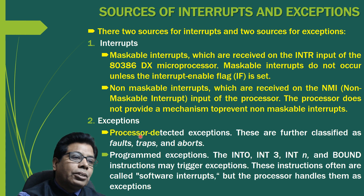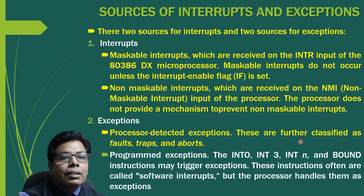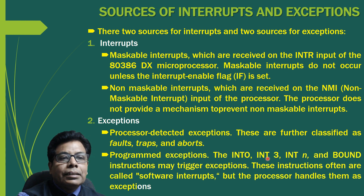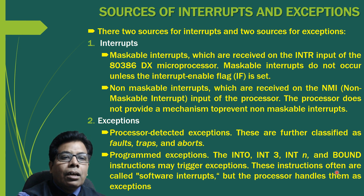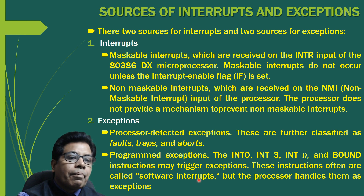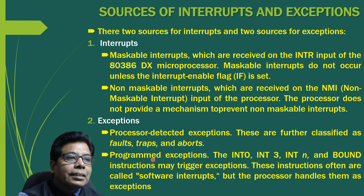For exceptions, the processor detects two sources: processor-detected exceptions, further classified as faults, traps, and aborts (to be discussed in detail later); and program exceptions — the INT0, INT3, INTN, and BOUND instructions may trigger exceptions. These instructions are often called software interrupts, but the processor handles them as exceptions. These are the two sources for exceptions; for interrupts, we have maskable and non-maskable interrupts.